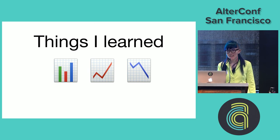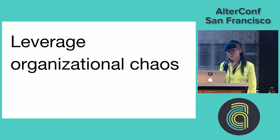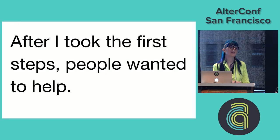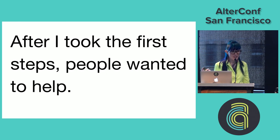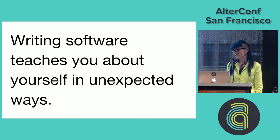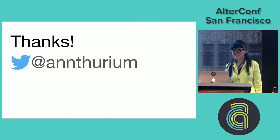So my biggest takeaways. Number one: you can leverage the chaos that will inevitably be present in your organization to advance your social justice agenda. Number two: once you get the ball rolling, people will want to help — they want to be on the right side of history. And number three: the process of building software, making things, teaches you about yourself in ways you might not expect. Thank you.